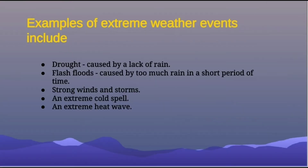Examples of extreme weather events include: drought, which is caused by a lack of rain; flash floods, caused by too much rain in a short period of time; strong winds and storms — as I spoke about with hurricanes; an extreme cold spell, which is straight coldness; and an extreme heat wave, which is quite the opposite — a lot of heat.